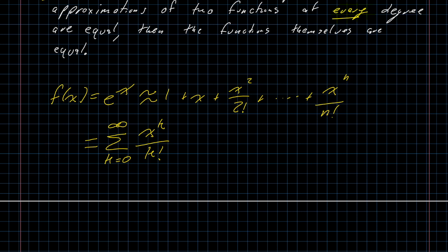That'll be the sum k goes from 0 to infinity of x to the k over k factorial. In modern analysis, this power series is actually the definition of the exponential function. e to the x is defined as the power series k goes from 0 to infinity of x to the k over k factorial.